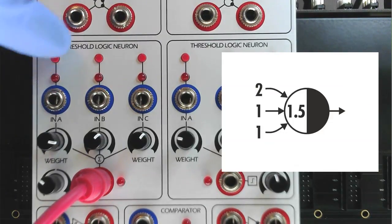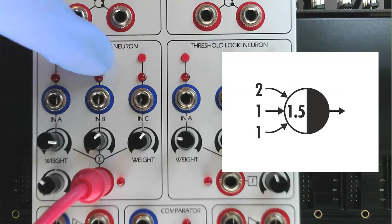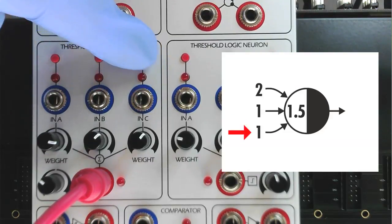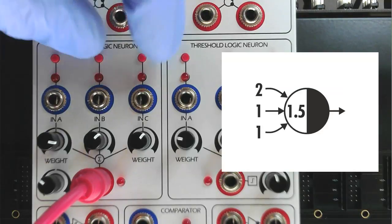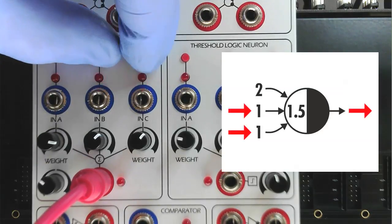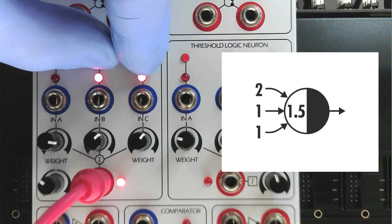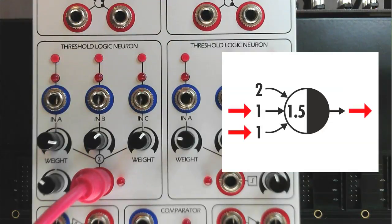Pulses sent to the B or C inputs with a weight of 1 would not overcome the threshold, making the statement false. However, pulses at both C and B would have their weight summed, 1 plus 1 equals 2, satisfying the expression and giving us a pulse at the output.